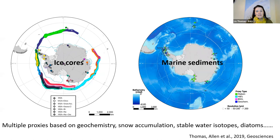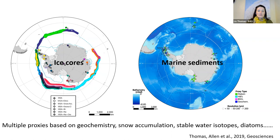Sea ice is clearly important, which leads to whether we have enough records to address these changes. In a 2019 review, I pulled together all published records and found 92 records used to reconstruct sea ice during at least part of the last 2000 years: 75 are from the marine realm — sediment records — and 17 are from ice cores. Between them, a range of proxies is used, including geochemistry, isotopes, snow accumulation, organic compounds, and diatoms. Despite this relatively high number, spatial coverage is pretty poor, with large sectors lacking any data.